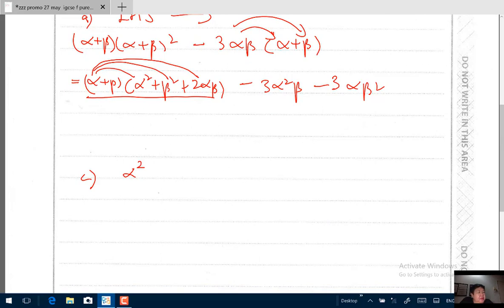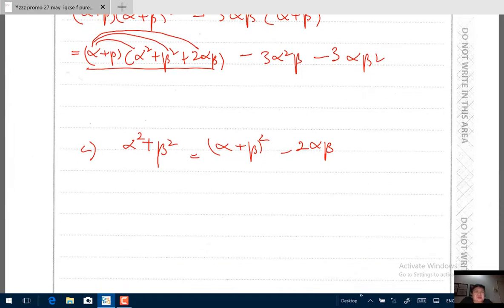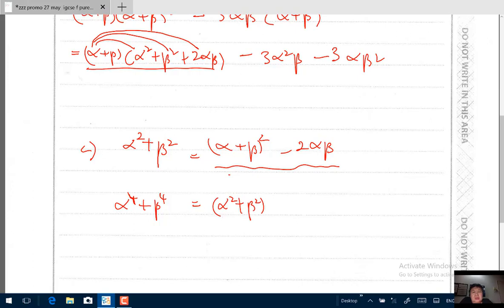You do have to know that α² + β² is actually (α + β)² - 2αβ. This is given in most of your textbooks for additional maths or Edexcel pure maths. So α⁴ + β⁴, you're going to replace α² with α² and β² with β², so it becomes (α² + β²)² - 2α²β².